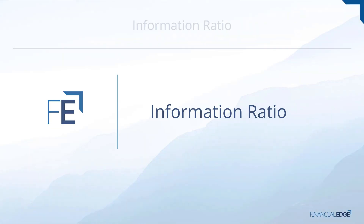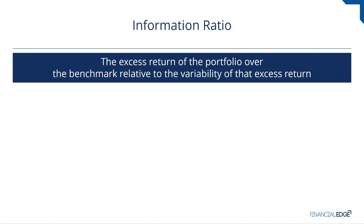The information ratio measures the excess return of a portfolio over a predetermined benchmark, but it also looks at the variability of that excess return. It helps investors answer two important questions about active managers: first, does the manager outperform the passive benchmark, and second, is the manager able to outperform the benchmark consistently? If the answer to either of those questions is no, it would result in a lower information ratio.